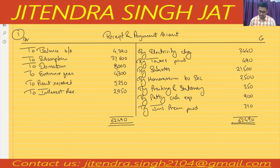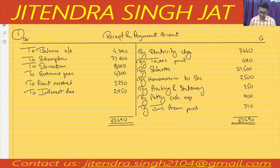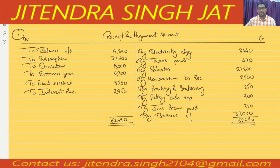Now let me subtract the credit side: three thousand four forty, four ninety, twenty-one thousand five hundred, two thousand five hundred, three fifty, nine hundred, three ten. The remaining balance is thirty-three thousand on the credit side — this is the cash balance. So by balance carried down — cash in hand.